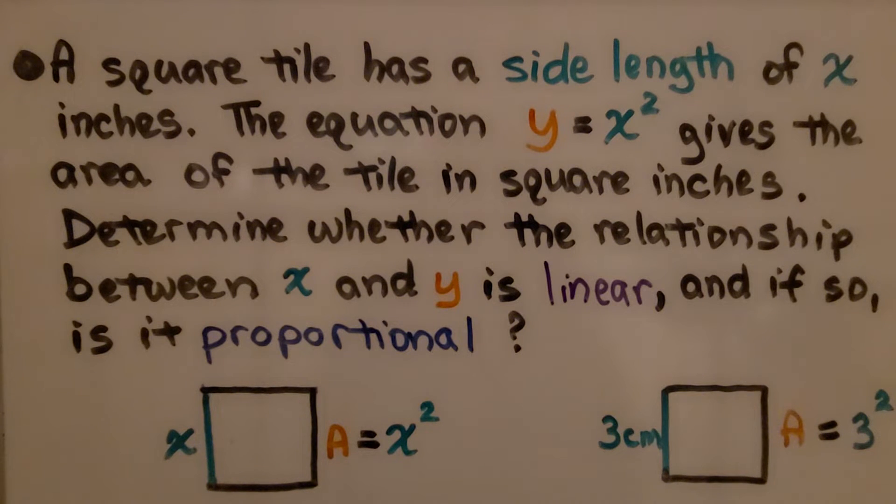A square tile has a side length of x inches. The equation y equals x squared gives the area of the tile in square inches. Determine whether the relationship between x and y is linear and if so, is it proportional.